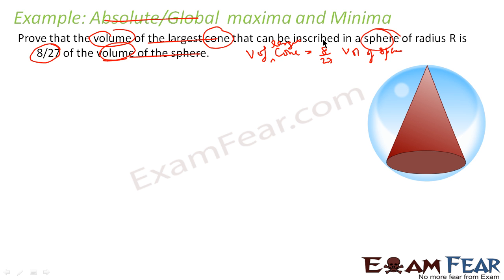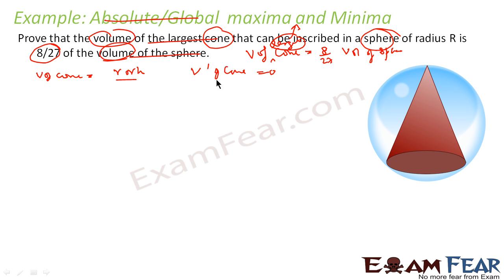In this question we are talking about the largest cone, so this is where we use maximum and minimum. The approach is simple: find the equation for the volume of the cone in terms of one variable — either r or h — then find V dash, set it to zero, and the value of r or h obtained will be where it is maximum or minimum. Double-check with V double dash, then compute the volume and verify it equals 8 by 27 of the sphere's volume. Here capital R is given and known.